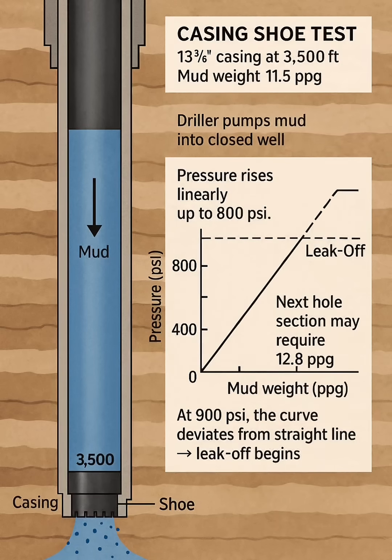The driller pumps mud into the closed well. Pressure rises linearly up to 800 psi. At 900 psi, the curve deviates from the straight line — leak-off begins.